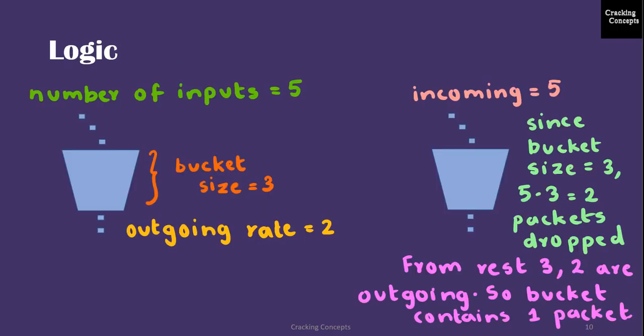Now looking into the logic that will be implemented here. This is an example showing the sample input that I have given in the program going to be discussed ahead. I have assumed that the bucket size is 3, the outgoing rate will be 2, and the number of inputs as 5. Taking these cases, I will be discussing how in each step the status of bucket can be calculated.